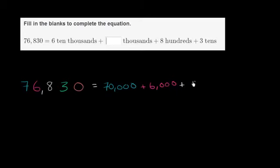Or you could say 8 hundreds - 800 plus 3 tens or 30. And then there's a zero one, so we could just write that out as zero if we like.